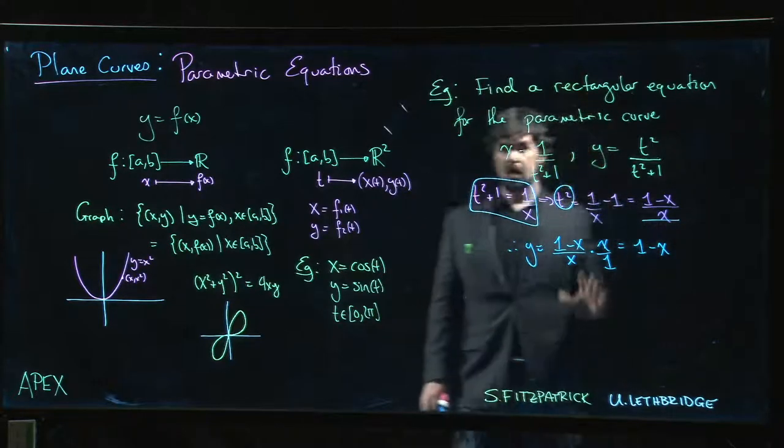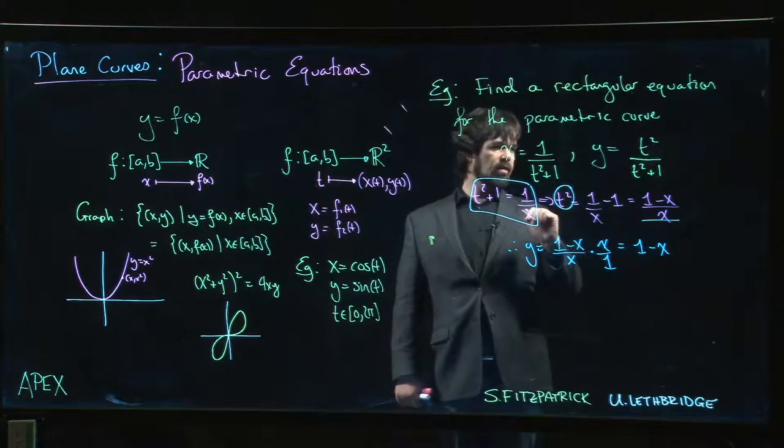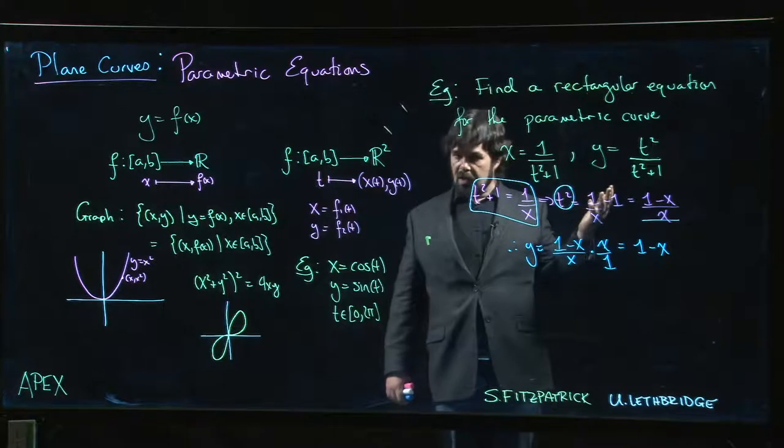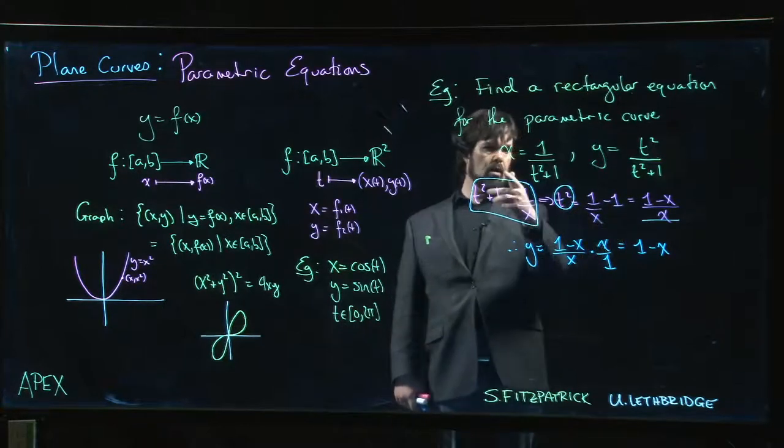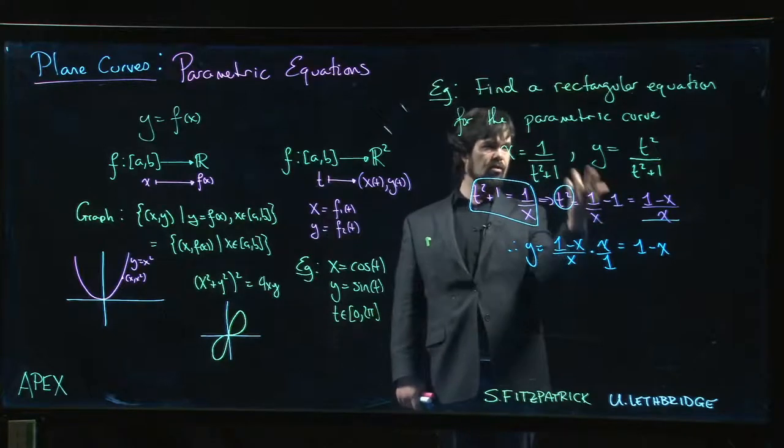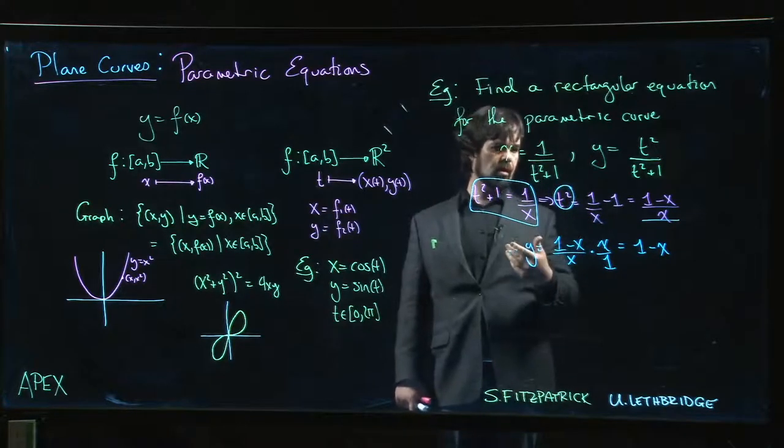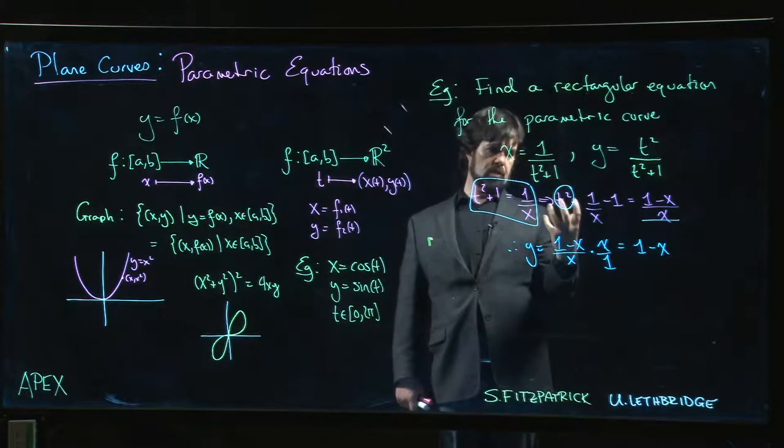We didn't place any restriction on the value of t here, so t could be any real number. But do we get all possible real numbers for x? What's the range of these parametric equations? Notice that that denominator is never going to get close to 0.